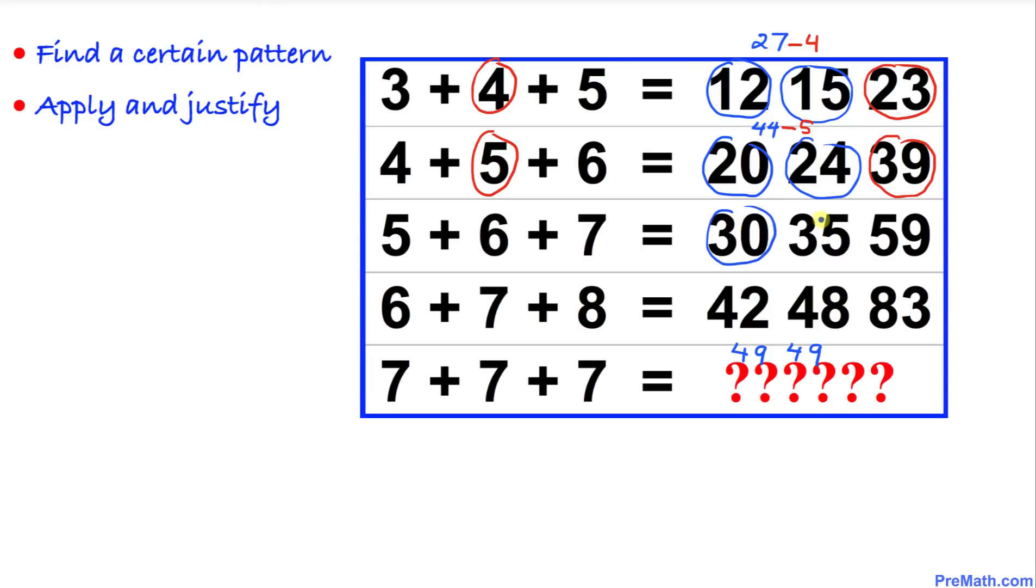Likewise, 30 plus 35 is going to give us 65, minus this middle number, take away 6, is going to give us 59.